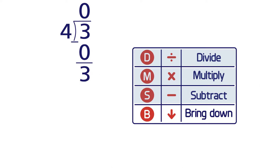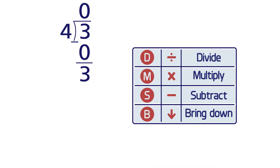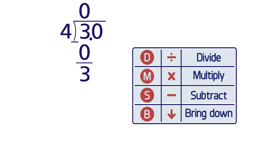Step 4 is bring down, but we have nothing to bring down, so we need to extend the problem. We write the decimal point after the 3 and a 0 in the tenths place to make 3.0. We can do this because a 0 to the right of a decimal does not change the value. Bring the decimal straight up. Now we bring down the 0.